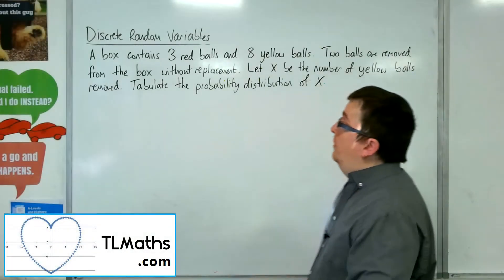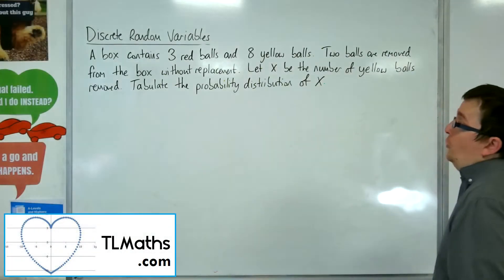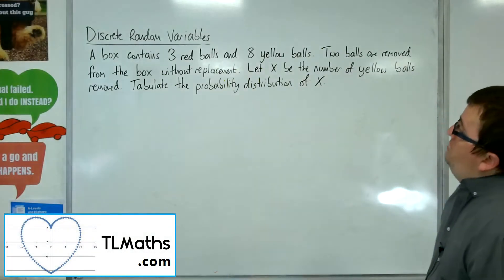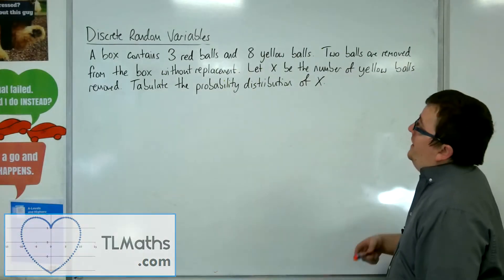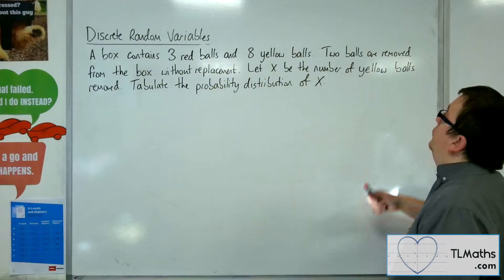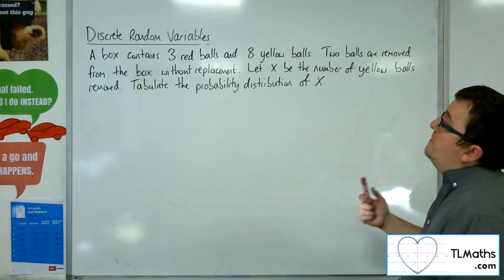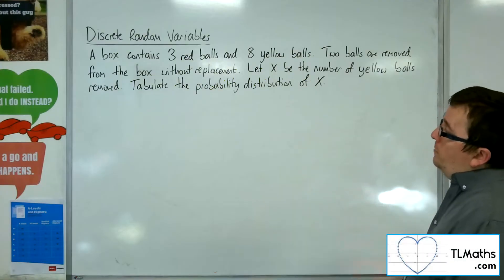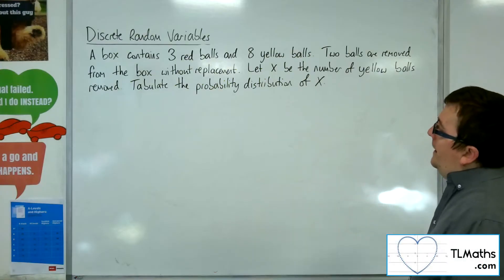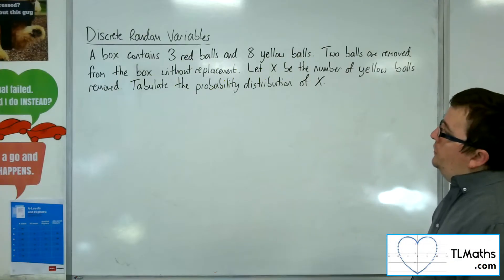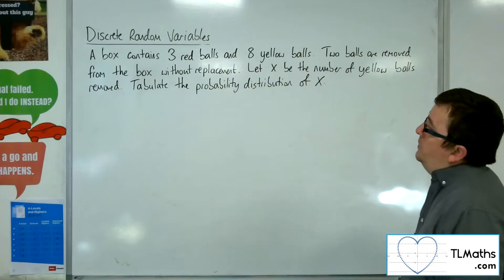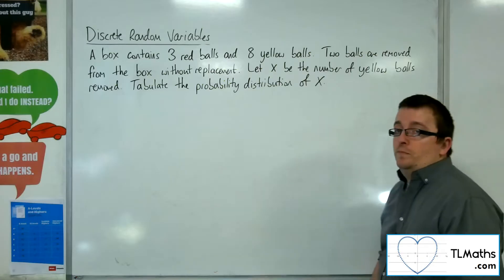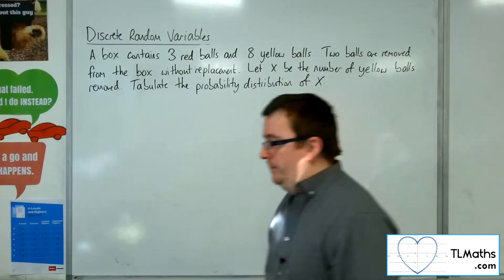In this problem, a box contains three red balls and eight yellow balls. Two balls are removed from the box without replacement. Let x be the number of yellow balls removed. Tabulate the probability distribution of x.